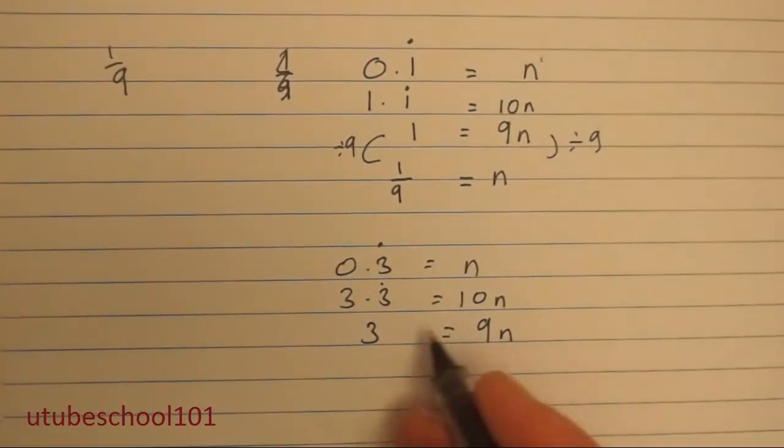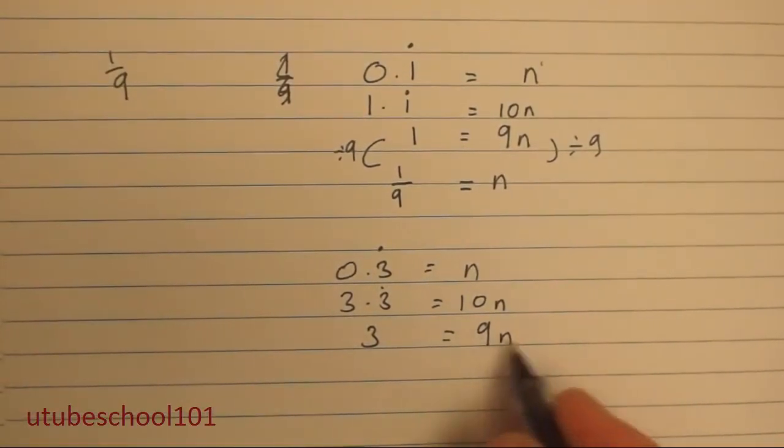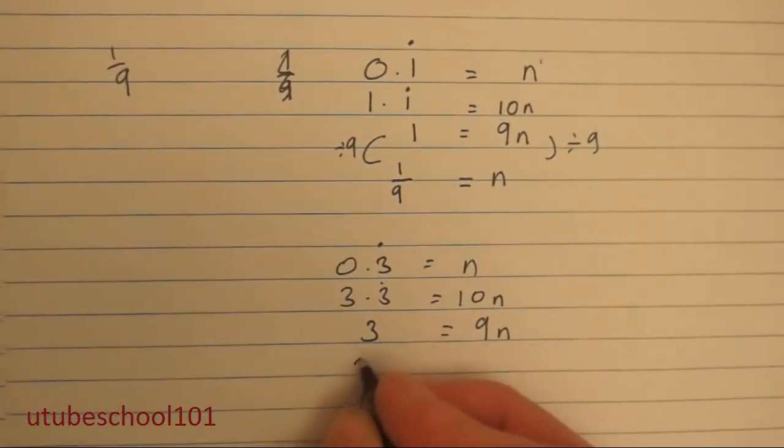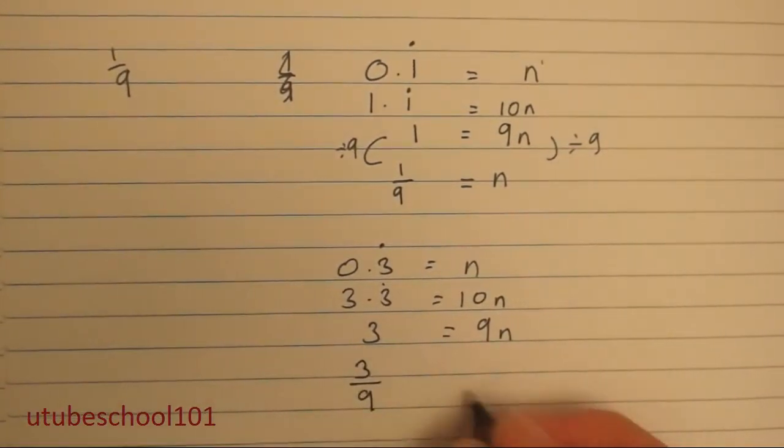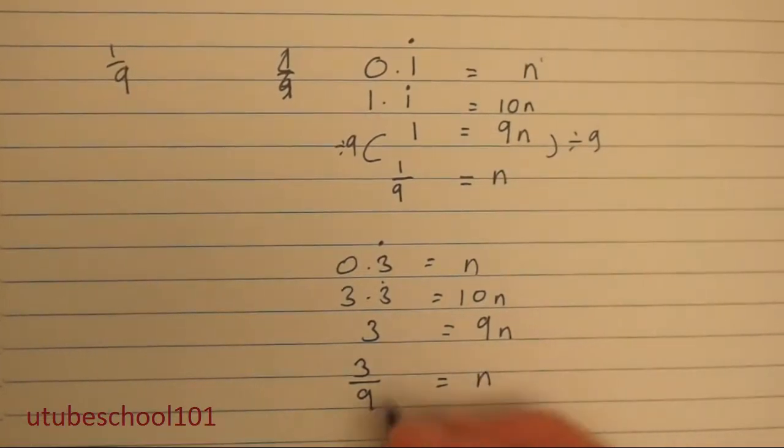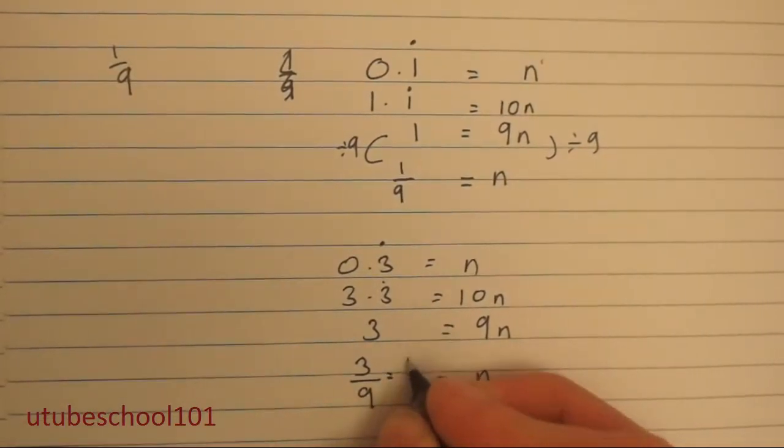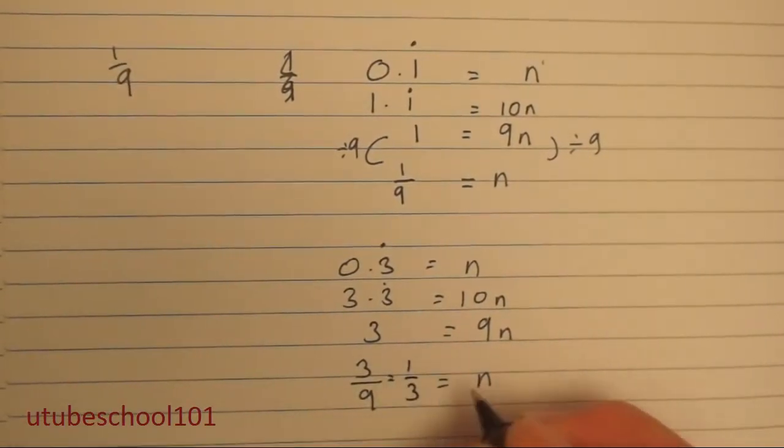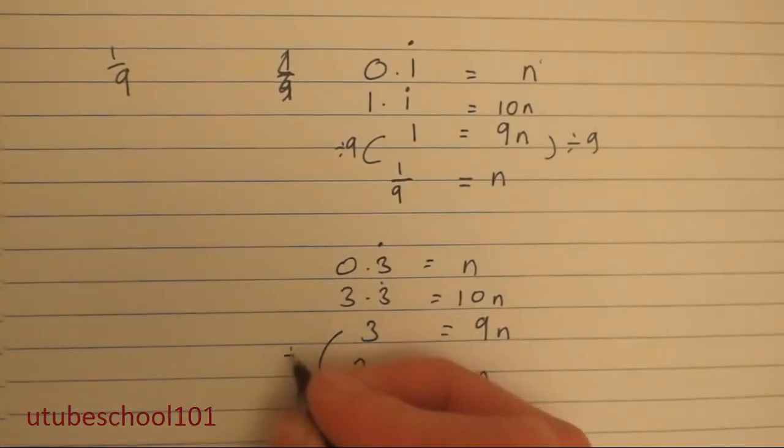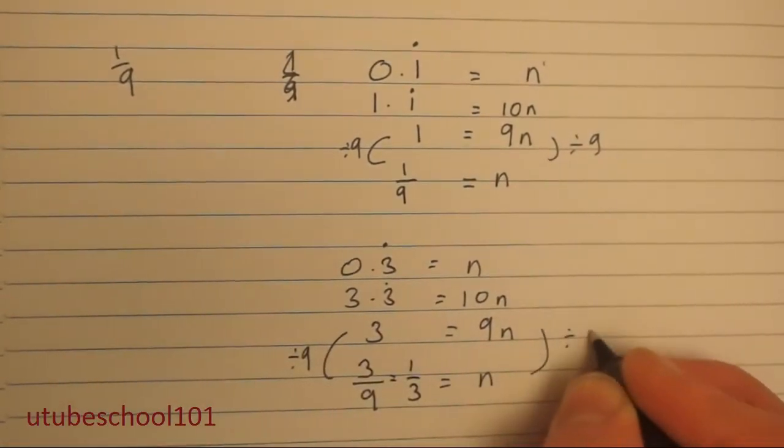And now we're going to divide both sides by 9. So 3 divided by 9 is equal to n. And then that simplifies down to 1 third.